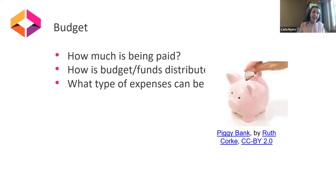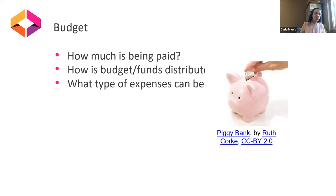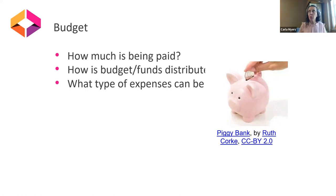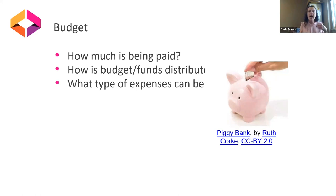We have offered faculty authors honorariums, but to a T, they have all said they're not doing this for the money and put it back into the project. But if you are offering an honorarium or stipend, something to include in the MOU is how that will be paid out — some institutions give half upfront and half when the work is published, others give the full honorarium when the work is finalized. You also want to include who is going to be paying people. Generally, any bills come to the library and we pay them, but at some institutions they transfer funds to the author's department and they're responsible for paying bills out of that fund.